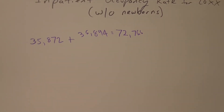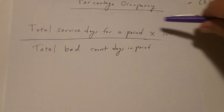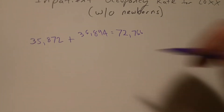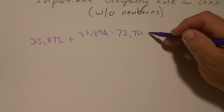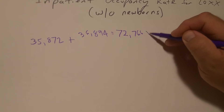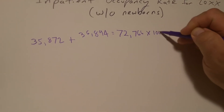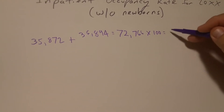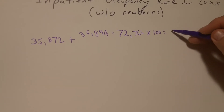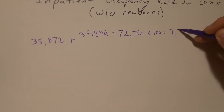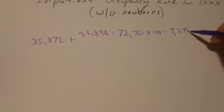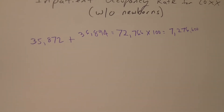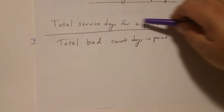According to our formula, that's our total service days for a period, and we need to multiply that by 100. So I'm going to take my 72,766 and multiply it by 100. That, of course, moves the decimal place over two, so we've got 7,276,600. That's the top portion of our formula.